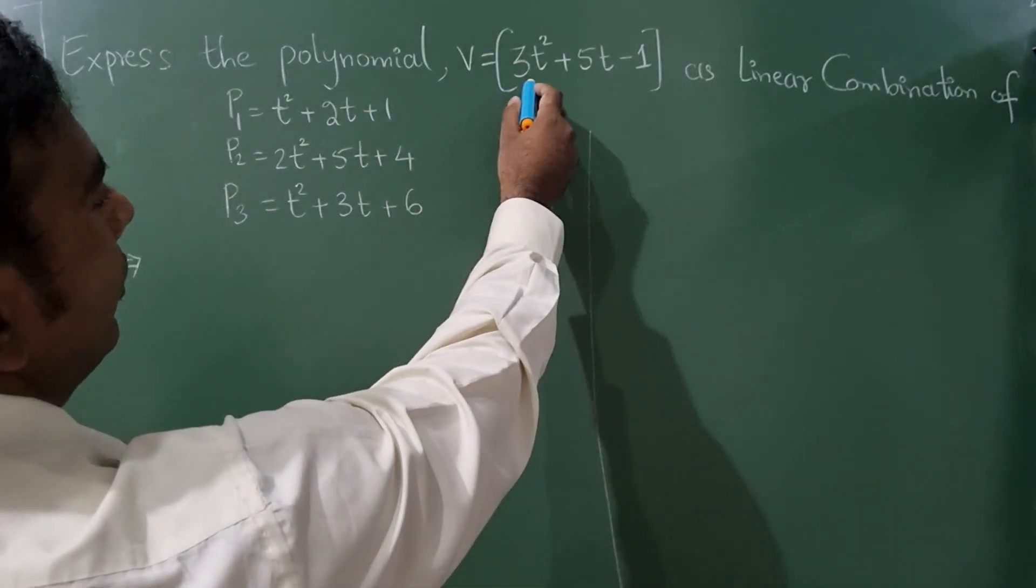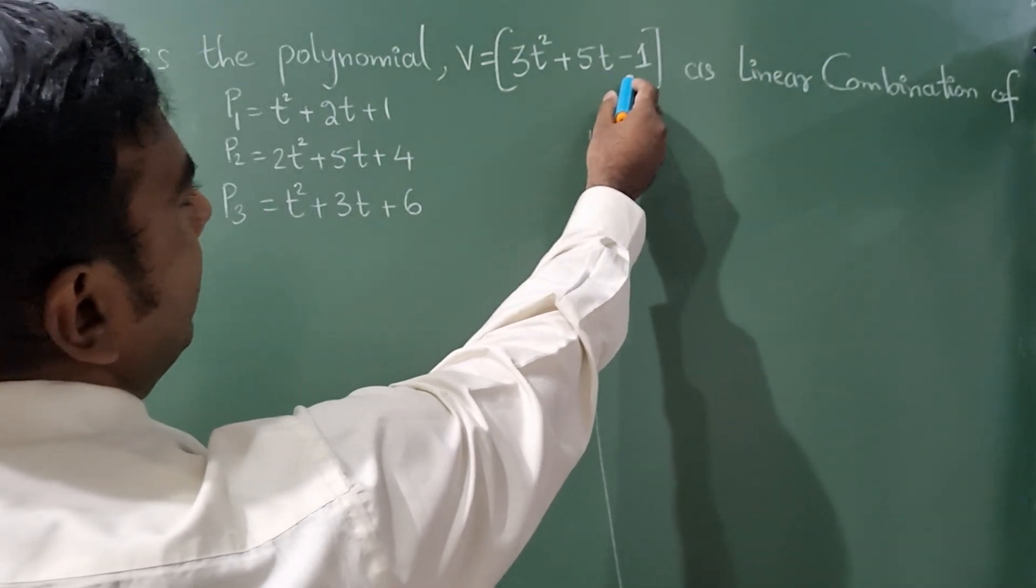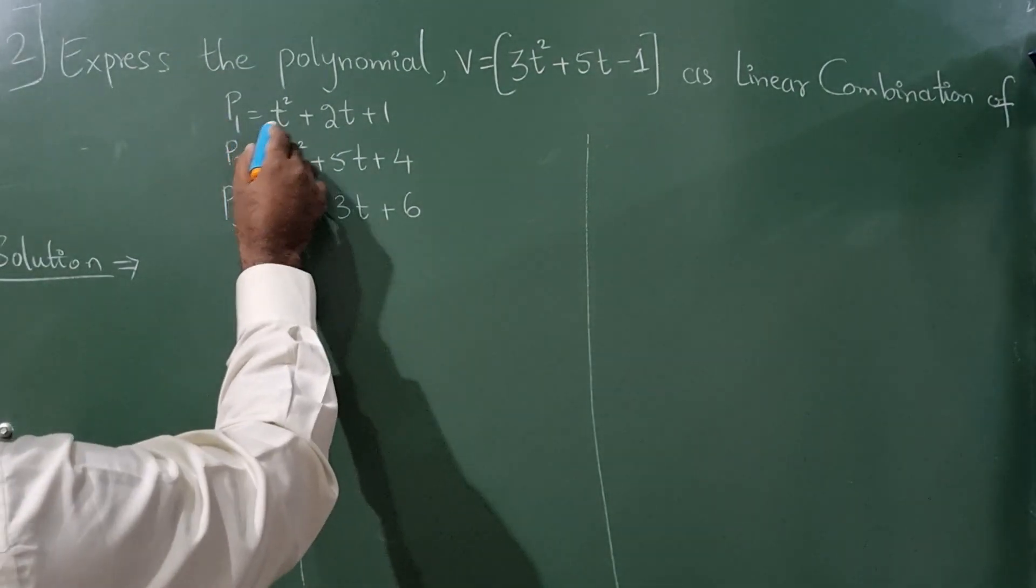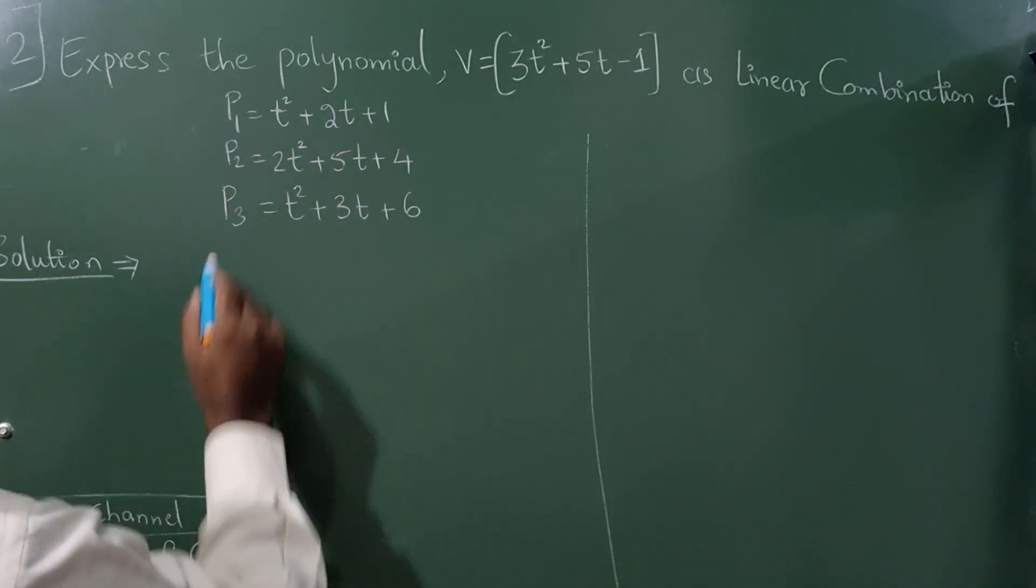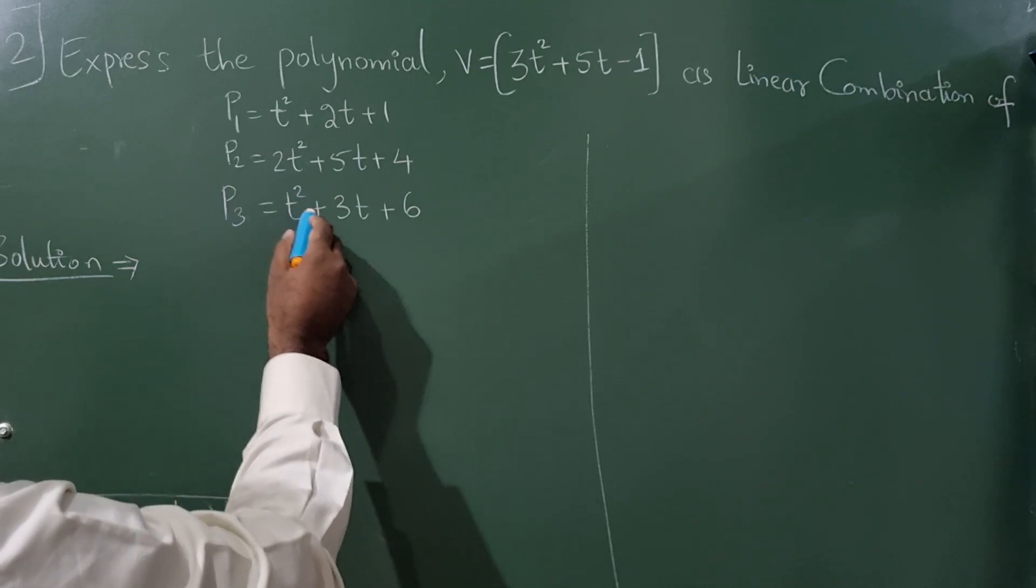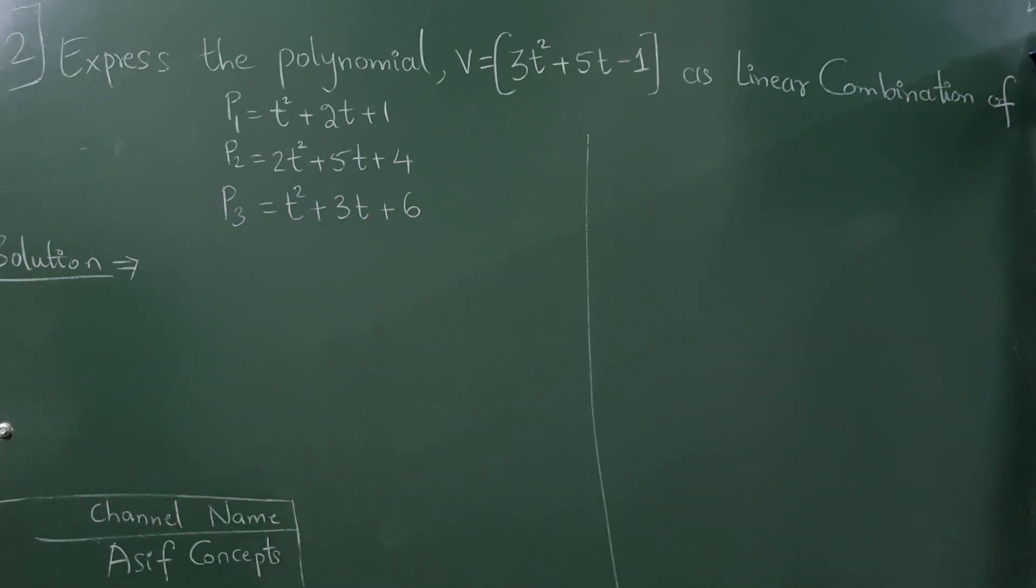Express the polynomial v = 3t² + 5t - 1 as a linear combination of p1 = t² + 2t + 1, p2 = 2t² + 5t + 4, p3 = t² + 3t + 6.